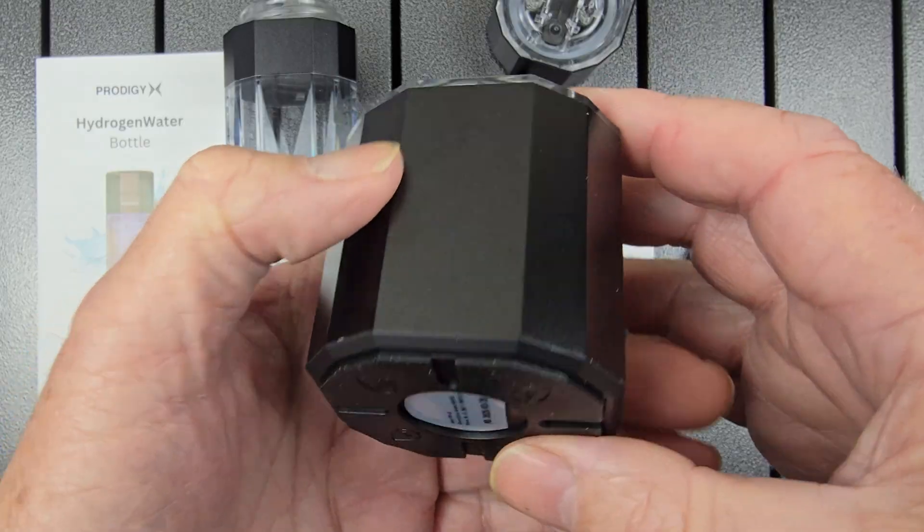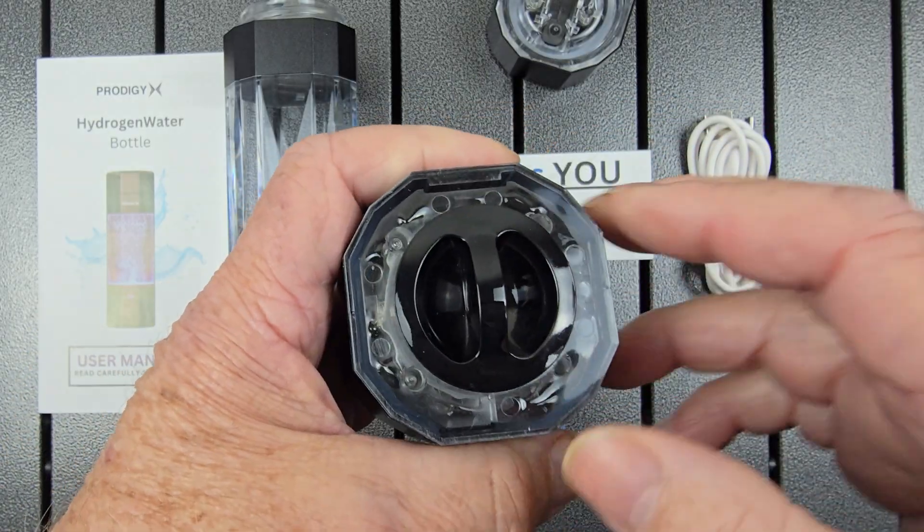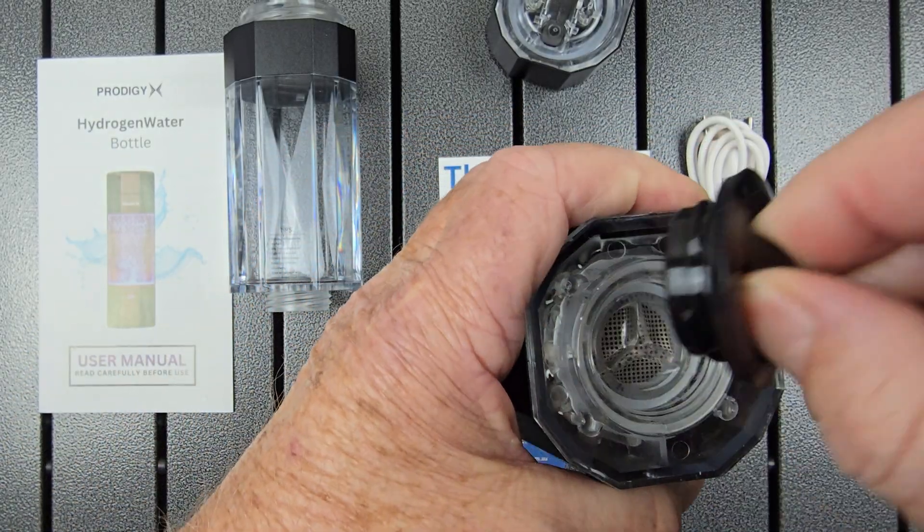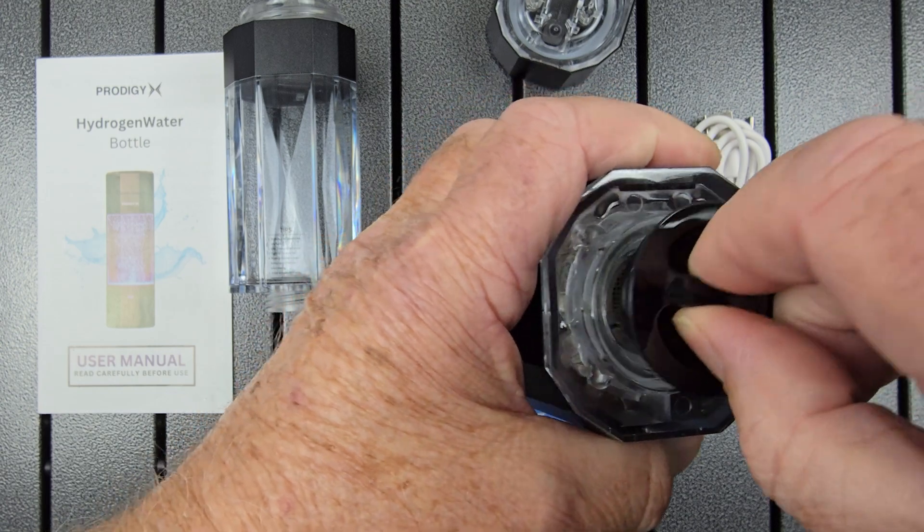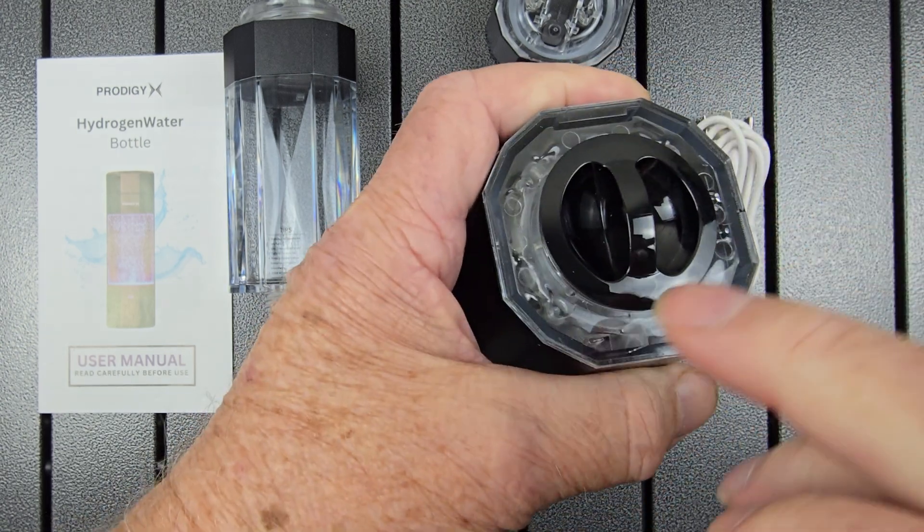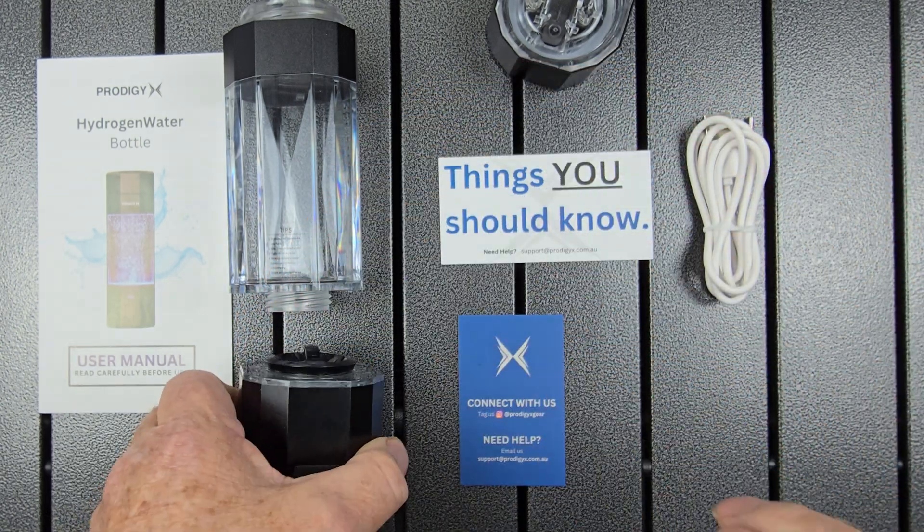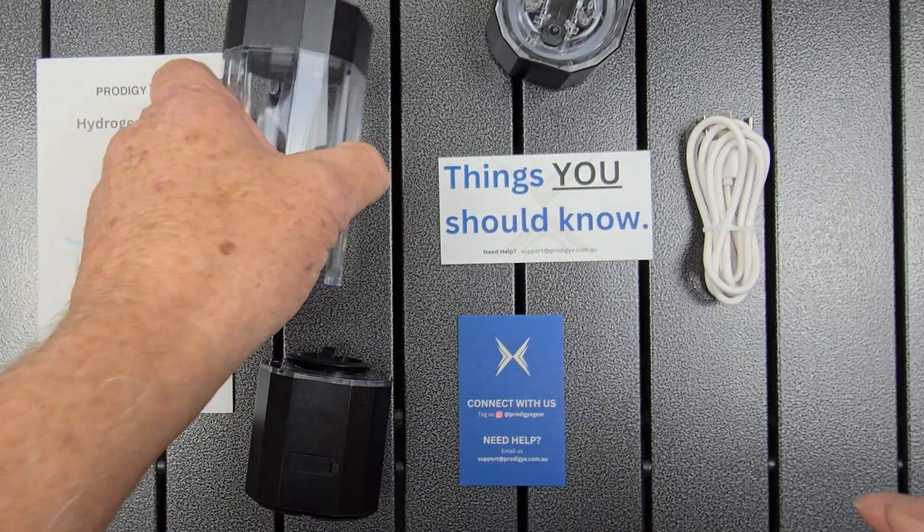This has already got a little bit of water in it. It does tell you in the instructions. This just unscrews and there's a little bit of water in the bottom there. You've got to keep the seals always moist, otherwise you'll have a problem later on.